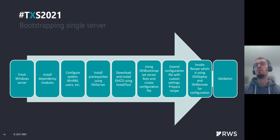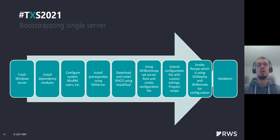Then we copy and prepare the recipe on the local system. The next step is invoking the recipe using ISHBootstrap. This recipe uses ISHDeploy and ISHRemote for system configuration, applies customer-specific files, and then we run some validation.